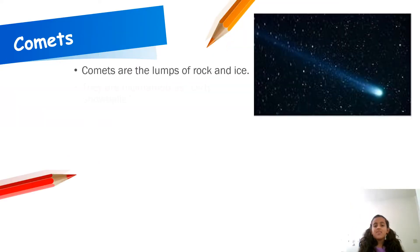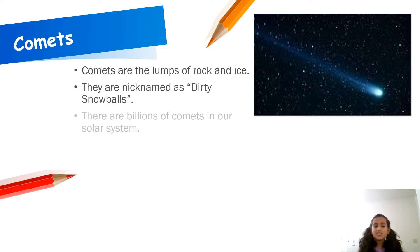Comets are the lumps of rock and ice. They are nicknamed as dirty snowballs. There are billions of comets in our solar system.